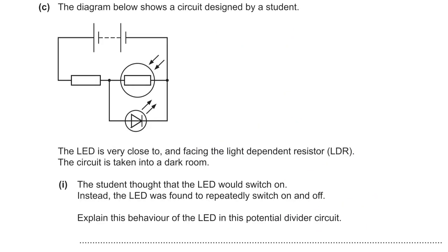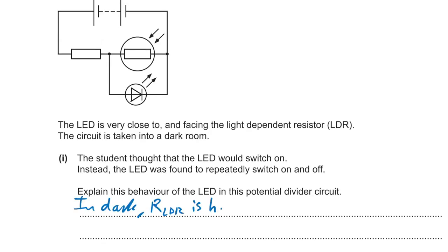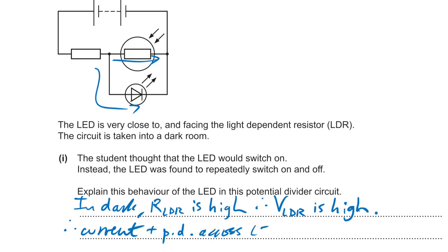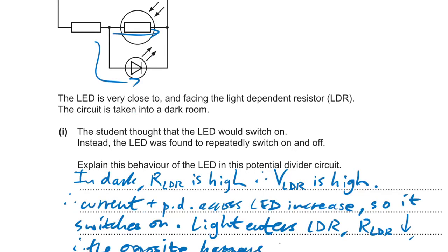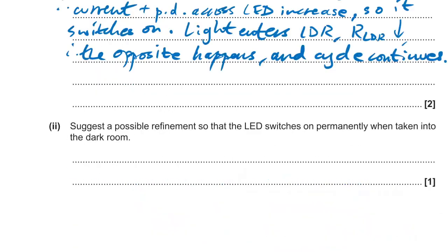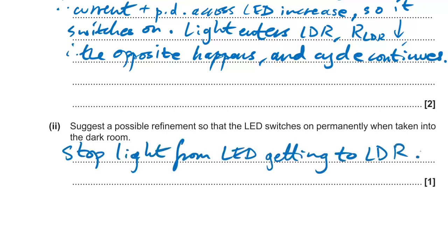Part C: LED and LDR in parallel. In the dark, the LDR's resistance is high, so it gets a large share of PD. Most current goes through the LED, which switches on. The LED's light then illuminates the LDR, reducing its resistance — the opposite happens and the LED switches off. This cycle repeats, causing pulsing. To prevent this, place a card between the LED and LDR to block the light.